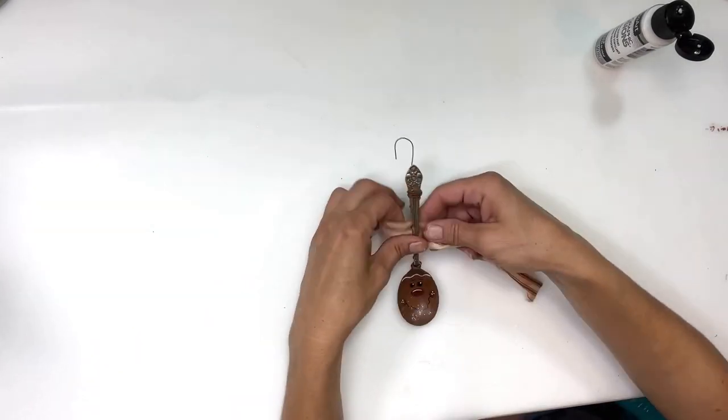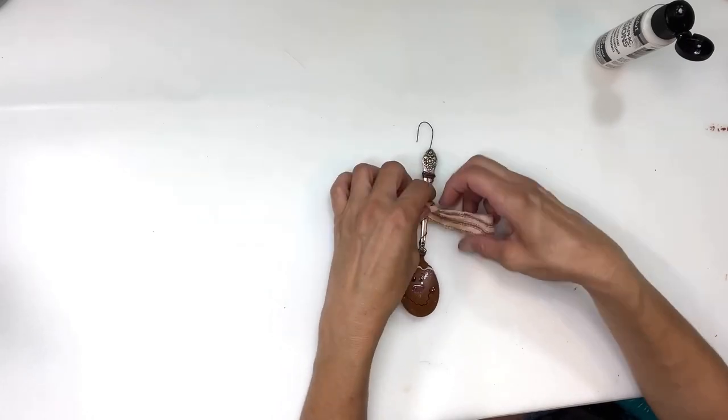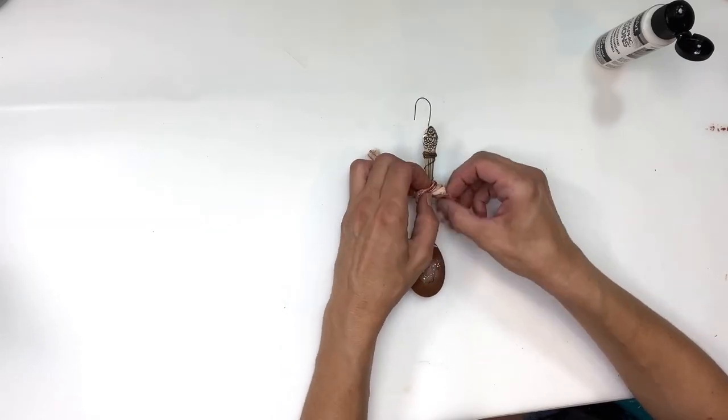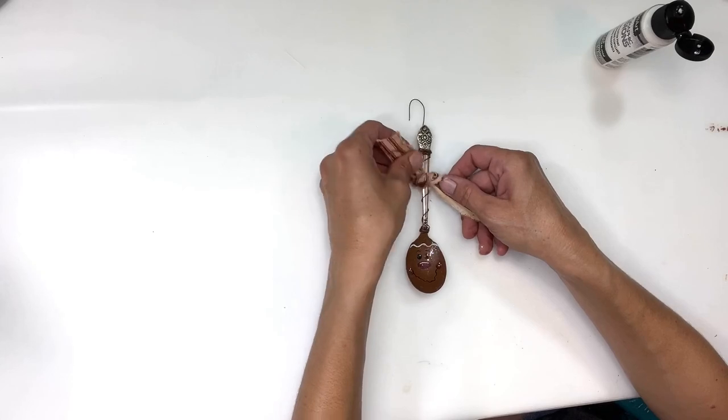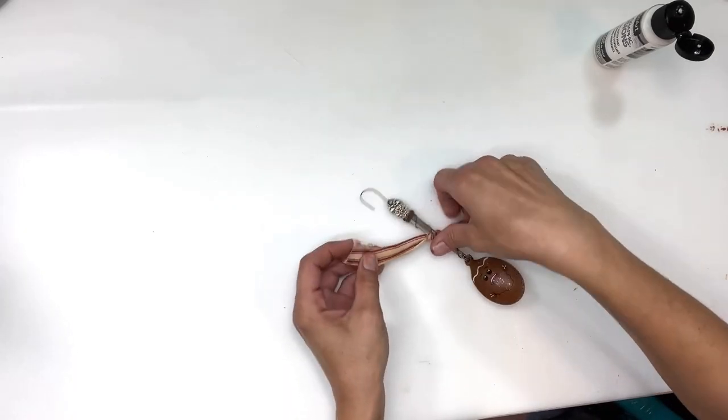Next I'm going to take some ticking fabric that I had. It's red and white and it's been coffee dyed. I'm going to tie that around the center, and this is pretty much just the same way we did the snowman. Tie that around the center, then cut off the excess.